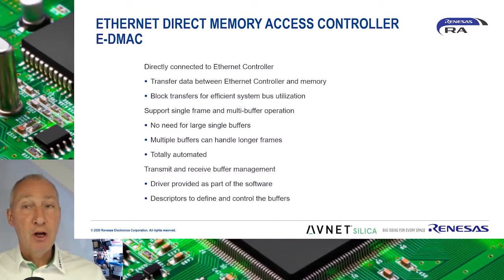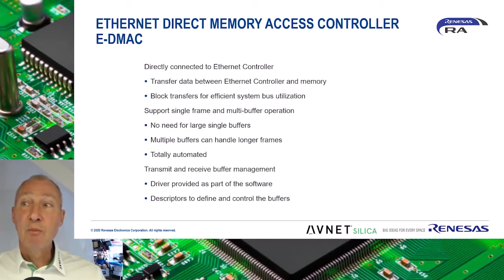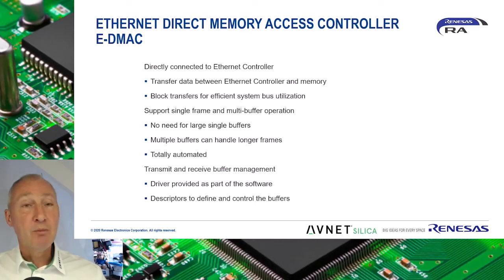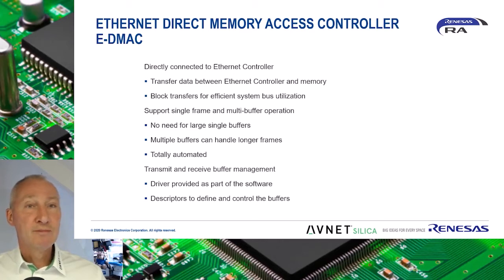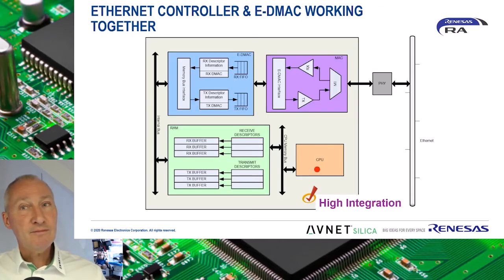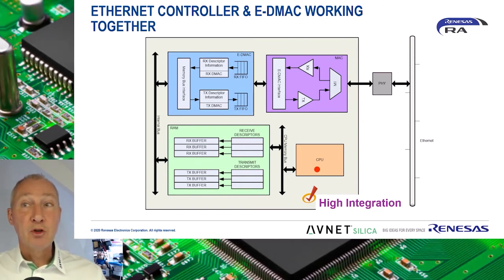If a given frame fits into one buffer, it is called a single frame operation. However, if the frame length is larger than the buffer size, the EDMAC performs multi-buffer operations to form the frame and process it. All these actions are automatically done by the EDMAC, and buffer pointers are updated as necessary. Now that we have seen the two Ethernet peripherals that make up the Ethernet block, let's take a look at how they all work together.